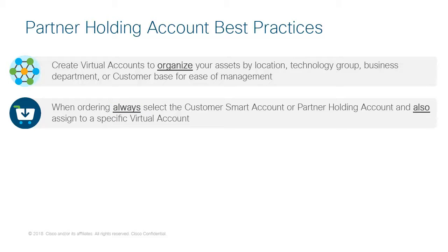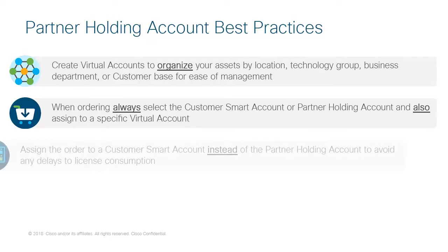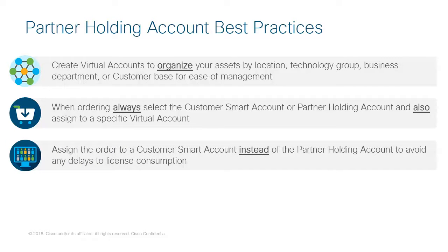However, if you're not sure of the Customer Smart Account, select the Partner Holding Account until the Customer Smart Account is known. Also, assign the order to a specific virtual account. If you do not assign licenses to a specific virtual account, they will be assigned to the default virtual account. Finally, whenever possible, assign the order to a Customer Smart Account instead of the Partner Holding Account to avoid any delays to license consumption, because licenses can only be consumed in a Customer Smart Account.